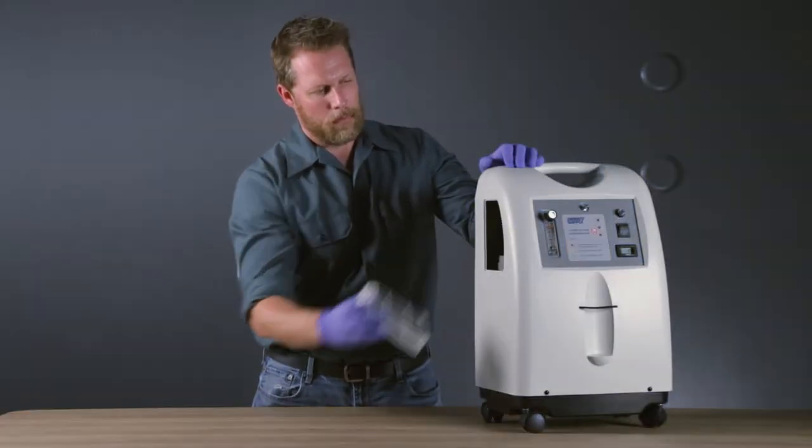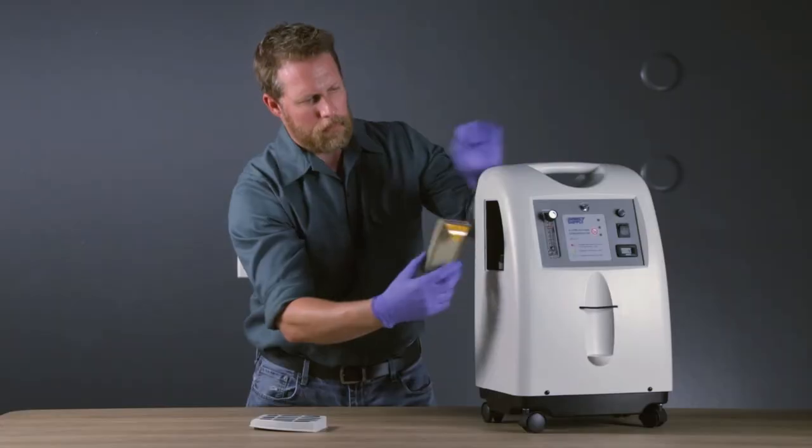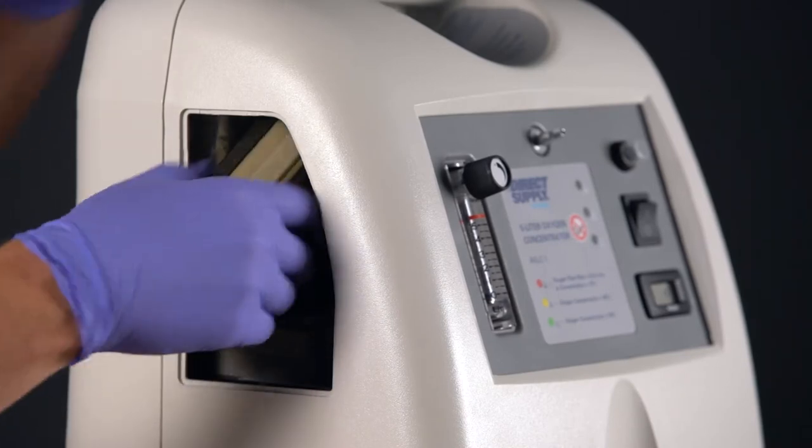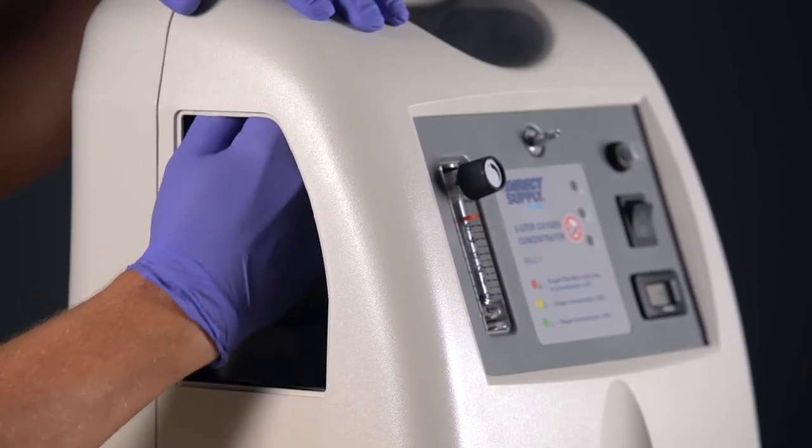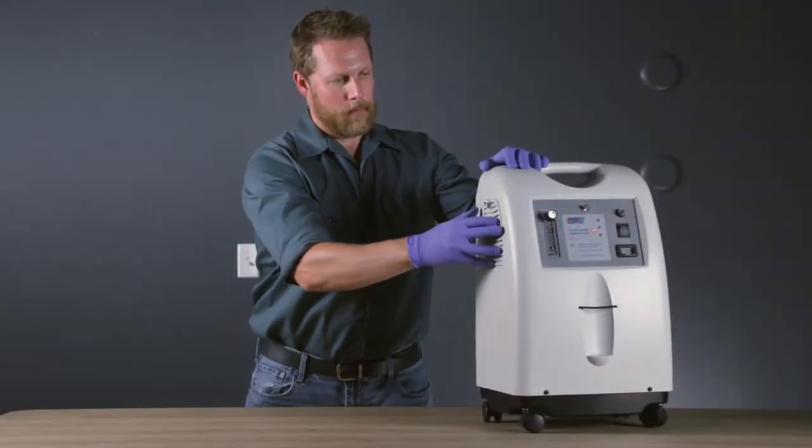Remove the access door on the left side of the concentrator. Take hold of the filter and lift up while using a twisting motion. To install a new filter, insert the plastic tube on the filter into the rubber fitting. Press down and twist until the filter is fully seated. Reattach the access door.